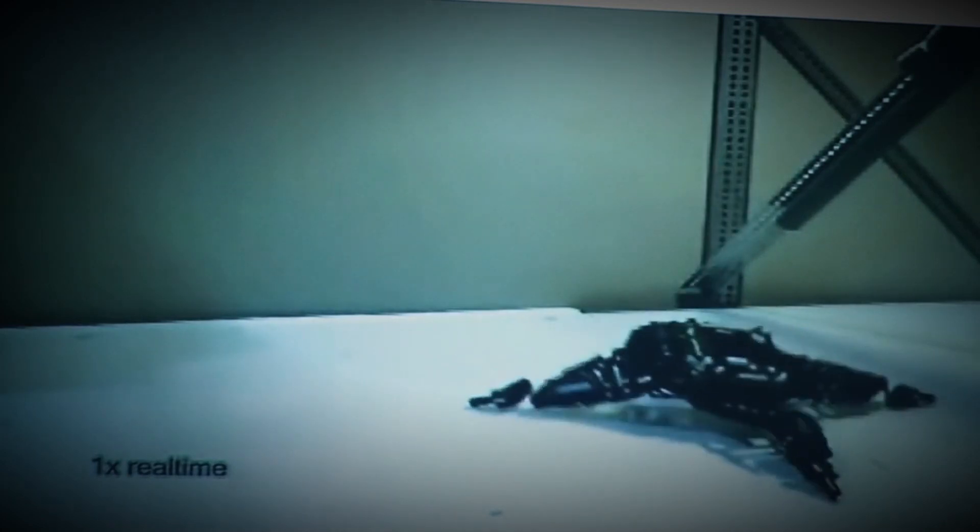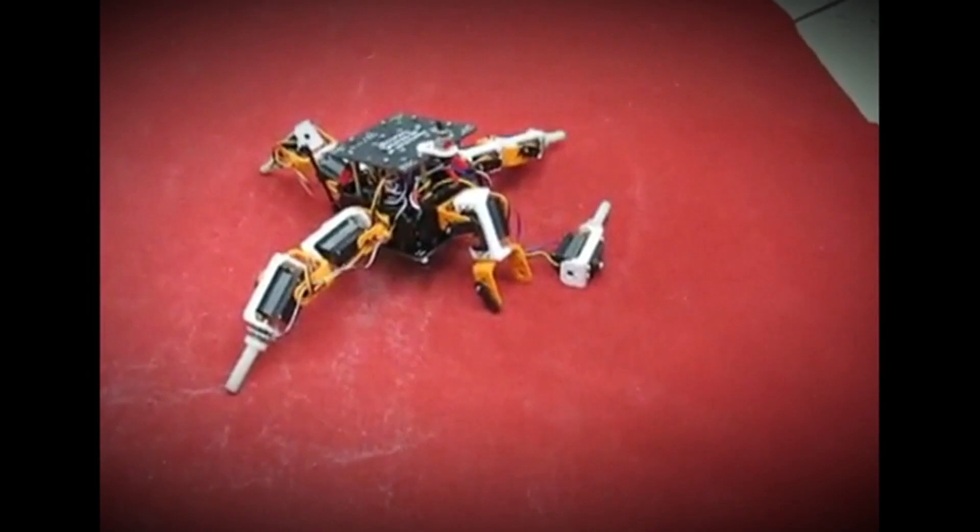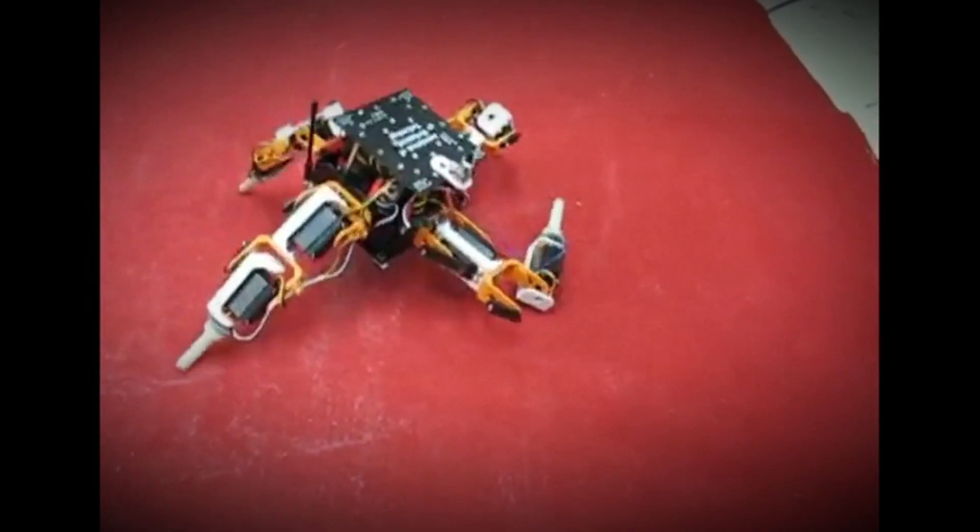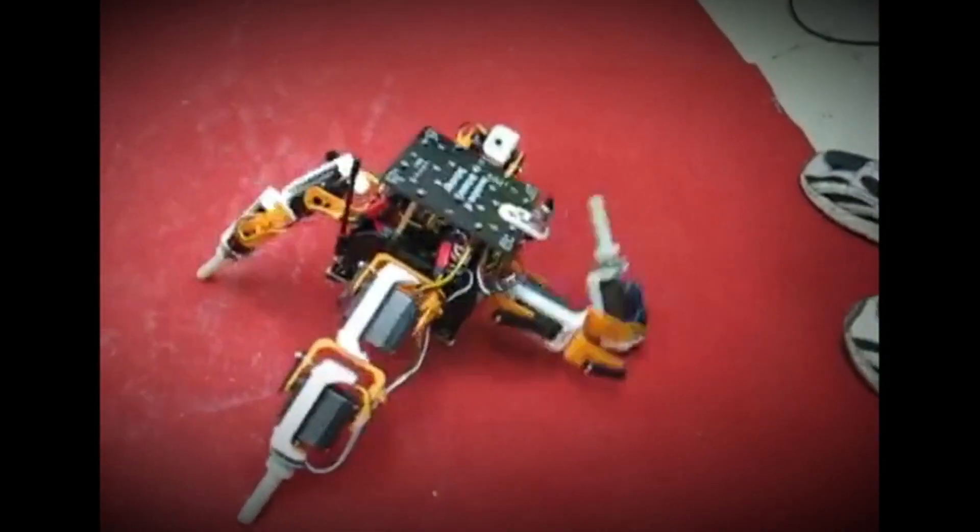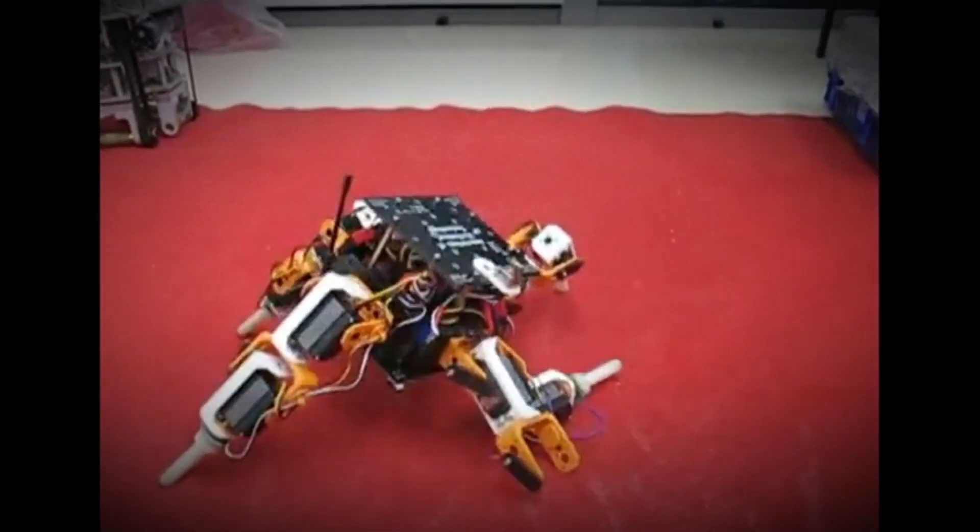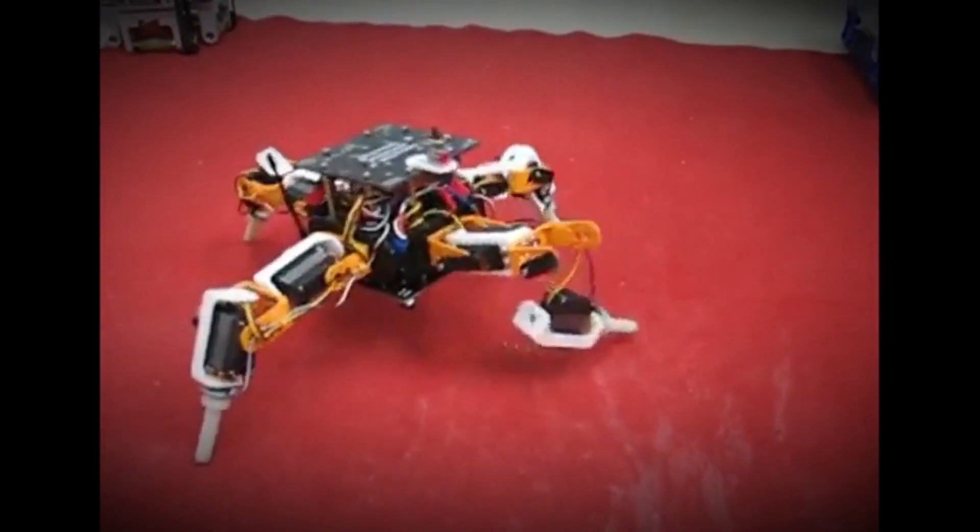And then we did something very cruel. We chopped off a leg and watched what happened. At the beginning, it didn't quite know what had happened. But over about a period of a day, it then began to limp.